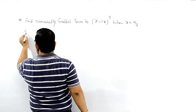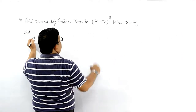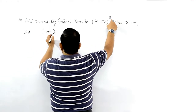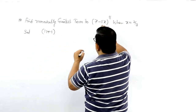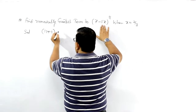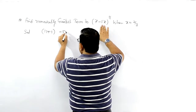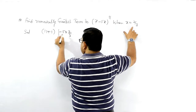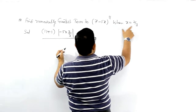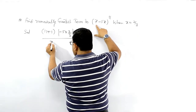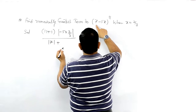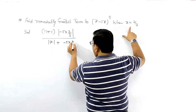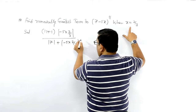पहला काम है: (n+1) / (mod x / mod a). n+1 = 11+1 = 12. mod a की जगह पर लिखेंगे minus 5, और x की जगह 2/3 बताया है, इसका mod लेंगे.